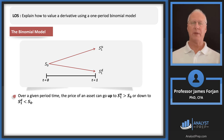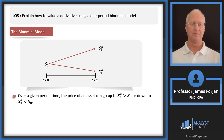What we're saying is that the stock price today is some number — let's suppose it's 100 — and one period from today it might be 110 or it might be 90, which would be an increase or decrease of 10 percent.